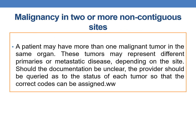Next guideline: Malignancy in two or more non-contiguous sites. A patient may have more than one malignant tumor in the same organ, and these tumors may represent different primaries or metastatic disease depending upon the site. If the documentation is unclear, the provider should be queried as to the status of each tumor so that correct codes can be assigned.